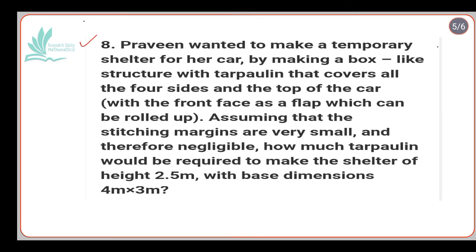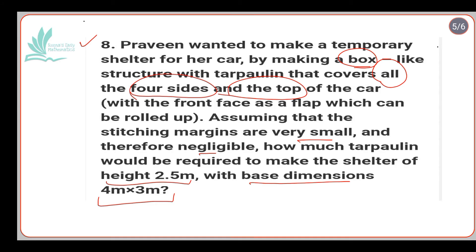Let's start reading the next question and try to find the keywords to get the answer. Praveen wanted to make a temporary shelter for her car by making a box-like structure with tarpaulin that covers all four sides and the top, with the front face as a flap which can be rolled up. Assuming stitching margins are negligible, how much tarpaulin is required? The height is 2.5 m and the base dimensions are 4 m × 3 m.